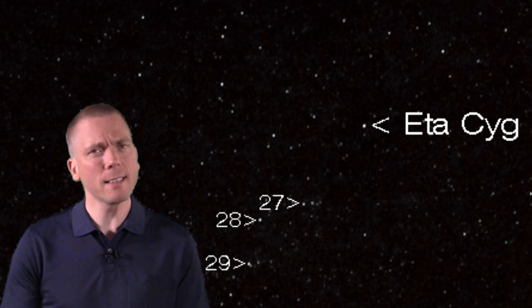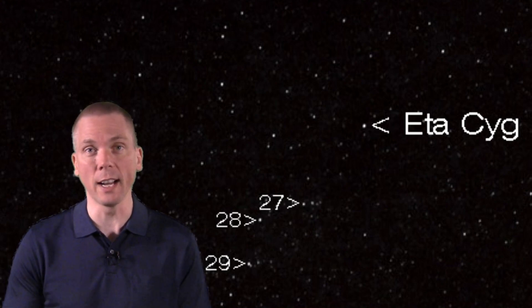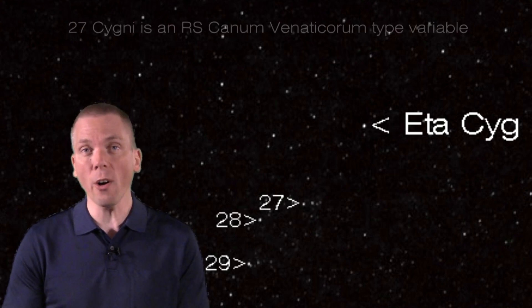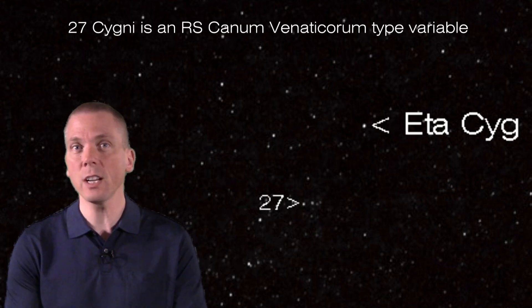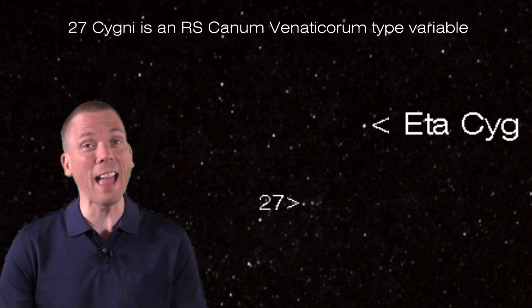It's an interesting star, being a K-spectral class subgiant, that is also an RS Canum Venaticorum type variable star. These types of stars are very close binary systems that have active star spots, which can be quite large. These spots are very likely the cause of the variations seen in luminosity. Stay right there for a really interesting open cluster.